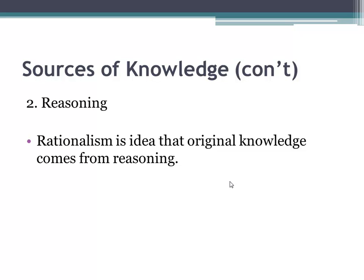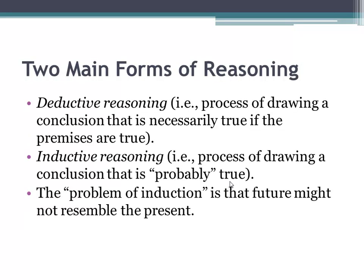The next source of knowledge is simply called reasoning. Historically, this idea was called rationalism — original knowledge comes from thought and reasoning. There are two main forms of reasoning. Deductive reasoning is the process of drawing a conclusion that is necessarily true if the premises are true; it is the classical approach used by the great rationalists in Western civilization. Inductive reasoning is the process of drawing a conclusion that is probably true. The problem of induction is that the future might not resemble the present, which is a major reason why we don't get proof in empirical research.